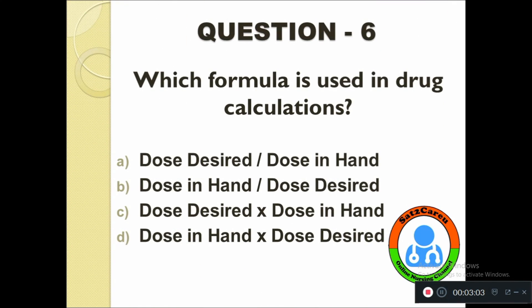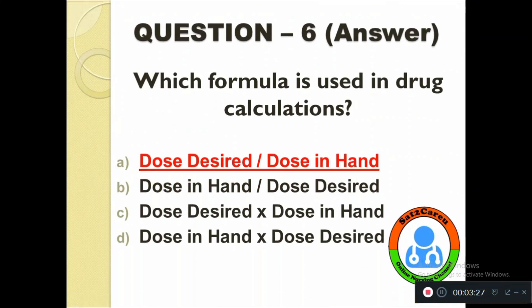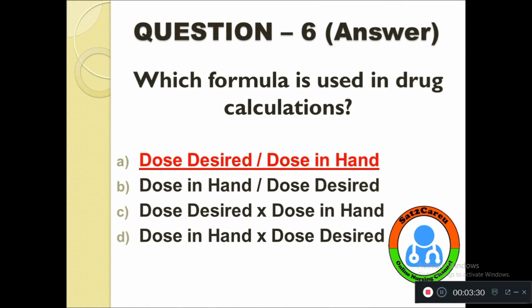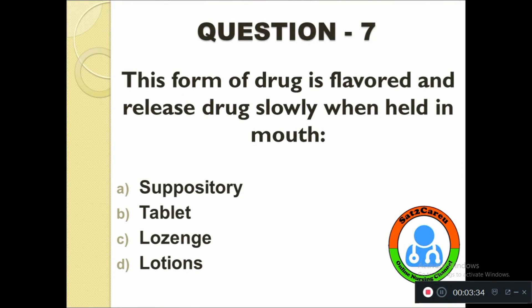Question number six: Which formula is usually used in drug calculation? Option A: Dose desired divided by dose in hand multiplied by diluent, option B: Dose in hand divided by dose desired multiplied by volume in hand, option C: Dose desired multiplied by dose in hand, option D: Dose in hand multiplied by dose desired. The correct answer is dose desired divided by dose in hand.